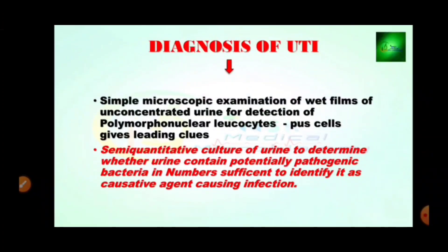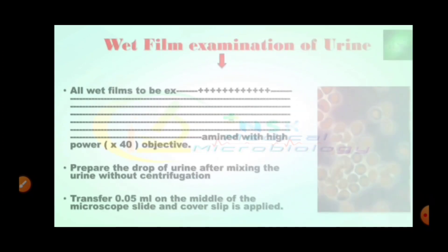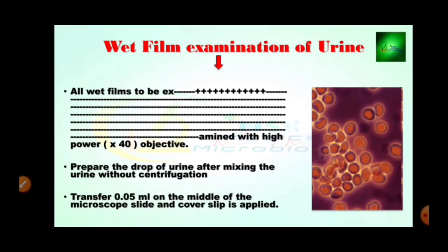Diagnosis of UTI: simple microscopic examination of wet films of unconcentrated urine is performed for detection of polymorphonuclear leukocytes and pus cells. This includes semi-quantitative culture of urine to determine whether urine contains potentially pathogenic bacteria in a number sufficient to identify the causative agent. Wet film examination of urine — as seen in the pictures — shows various types of pus cells. All wet films are examined at high power objective. Prepare a drop of urine after mixing without centrifugation, transfer 0.05 ml onto the middle of a microscope slide, and apply a cover slip.